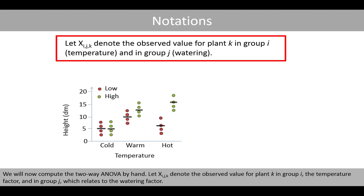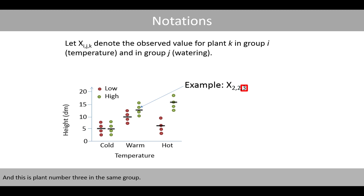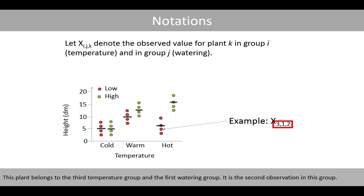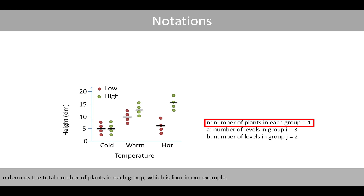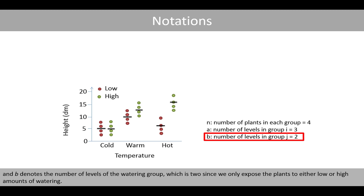We'll now compute the two-way ANOVA by hand. Let X_IJK denote the observed value for plant K in group I, the temperature group, and in group J, which relates to the watering factor. For example, this plant has a height of about 15 decimetres; it belongs to the second temperature group and the second watering group, and it is the fourth plant in this subgroup. N denotes the total number of plants in each group, which is four. A represents the number of levels in the temperature group, which is three. And B denotes the number of levels of the watering group, which is two.